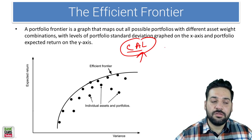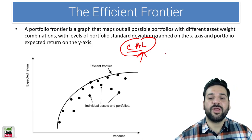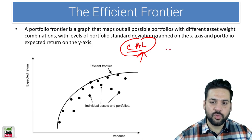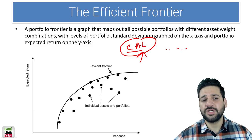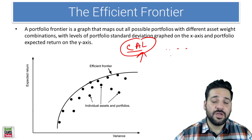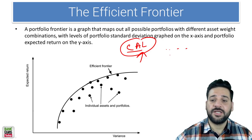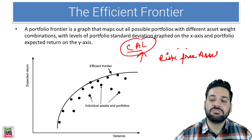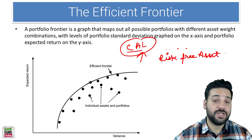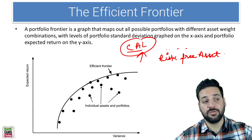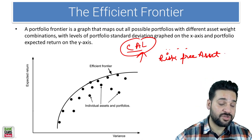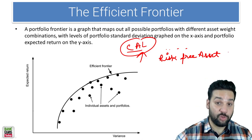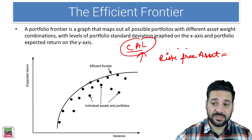Suppose you are going to invest your money into two types of risky assets — two or more than two risky assets. There is a risk-free asset, which is bonds issued by the Reserve Bank of India. There is no risk involved when you are buying the bonds of Reserve Bank of India. There is no scope of default — RBI is not going to default at all. So the risk is zero.